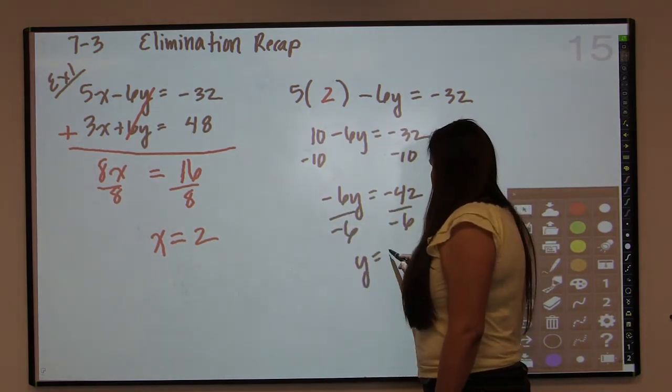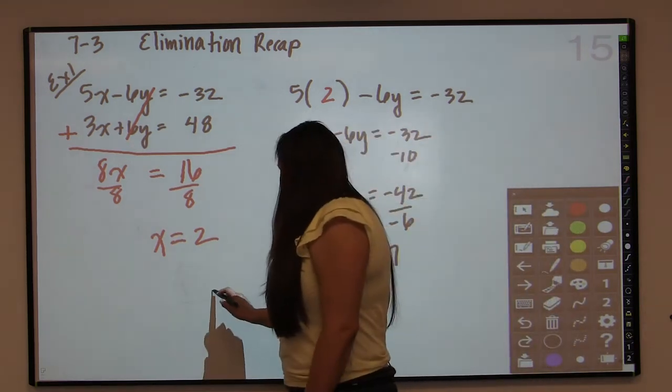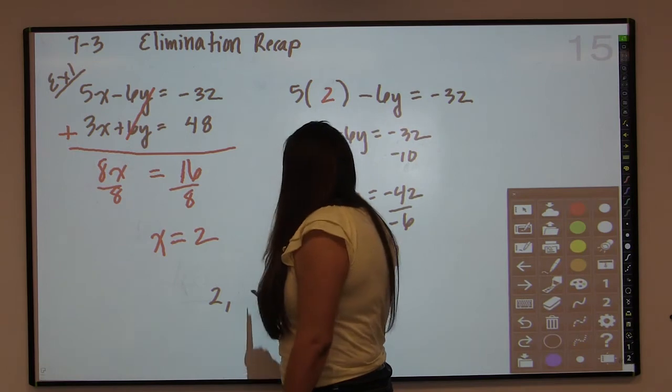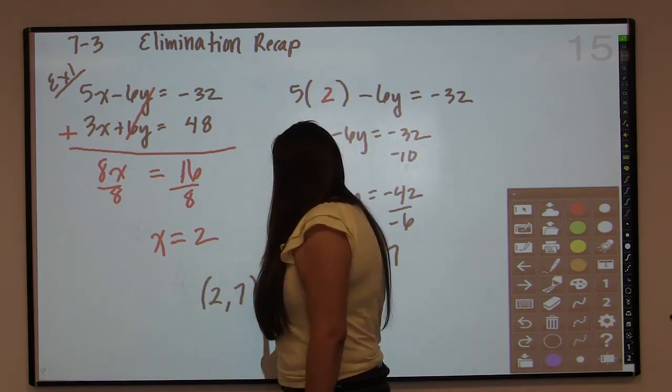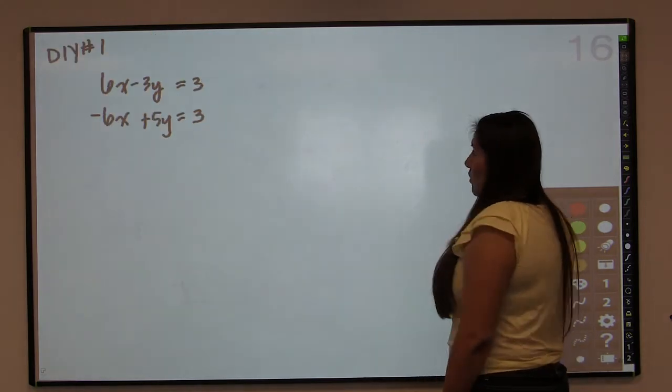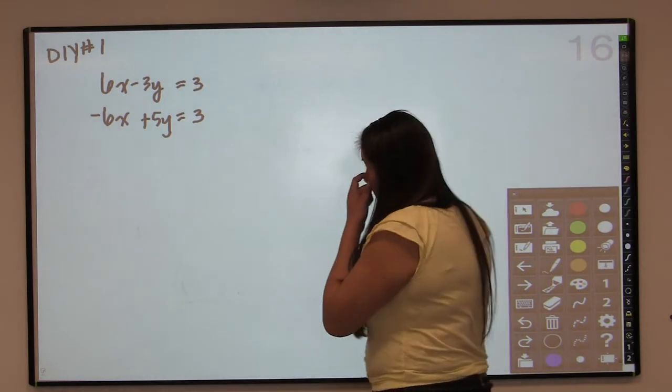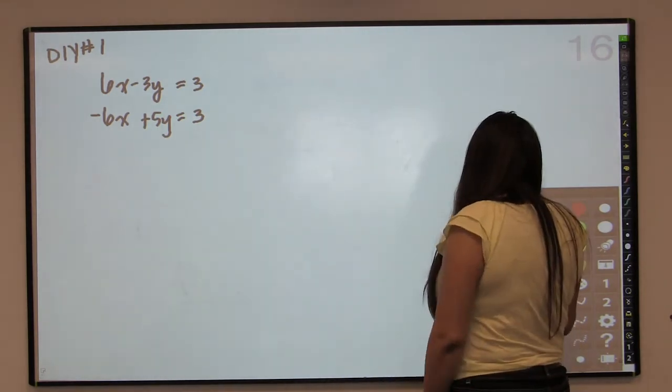And lo and behold, y equals positive 7. You should always write your solution as an ordered pair in alphabetical order. So x goes first, y goes second, and here is your solution to that problem. Now I'm going to have you try one on your own. There it is. You can pause now and write that down as a good example.